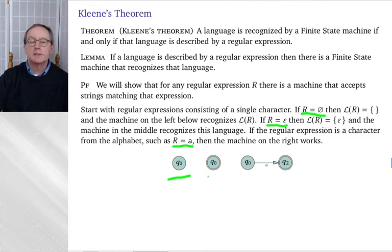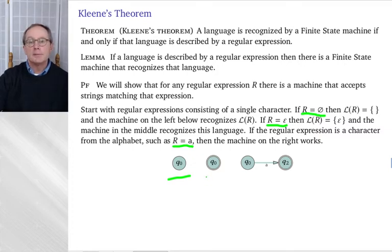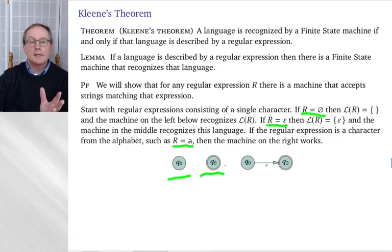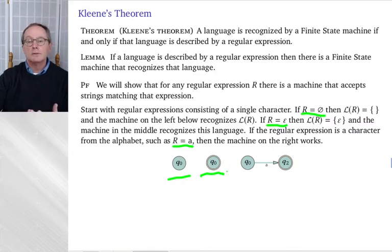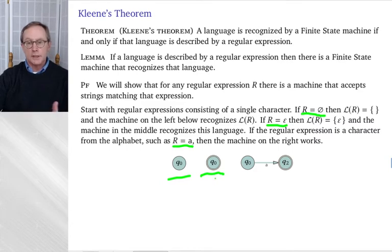What if the regular expression is just the epsilon symbol — the empty string? I want a finite state machine that accepts the empty string and only the empty string. That machine has Q0 as an accepting state. If you turn the machine on and the tape is empty, it accepts. If you give it an A, the child process goes off to nowhere and stops. So this non-deterministic finite state machine accepts only the empty string.